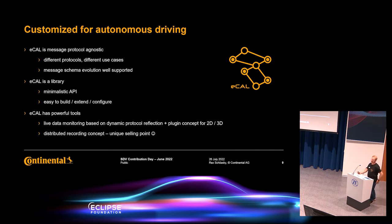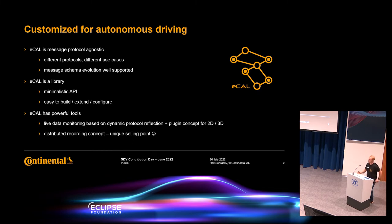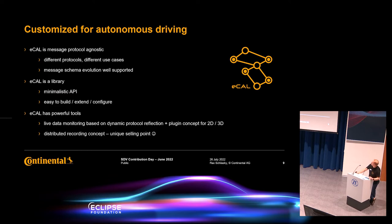Last but not least, over the last years eCal has gained a lot of powerful additional tools. We have a tool called eCal Monitor — I'll show it later in the demo — that can visualize all data flows, make protocol reflections to look inside messages, and has a plugin concept to add additional plugins for complex message types like images, point clouds, and similar formats. Another unique selling point for eCal is the distributed recording concept, which I will show later.